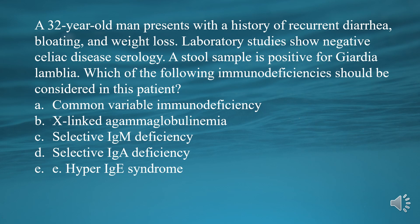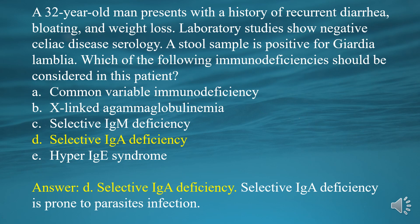A. Common variable immunodeficiency. B. X-linked agammaglobulinemia. C. Selective IgM deficiency. D. Selective IgA deficiency. E. Hyper-IgE syndrome. Answer: D. Selective IgA deficiency.